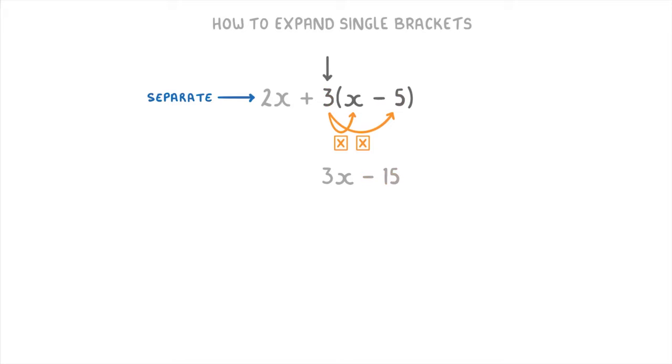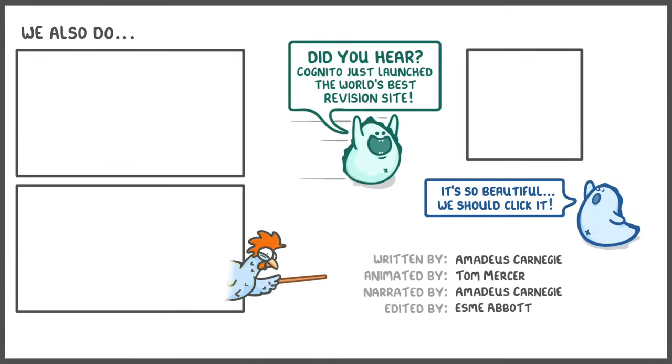And then once you've done that and we've expanded that bracket, we can bring down the 2x term as well. So you're now left with 2x plus 3x minus 15, which you can then simplify to 5x minus 15 as your final answer. Anyway, that's everything for this video, so hope you found it useful and thanks for watching.